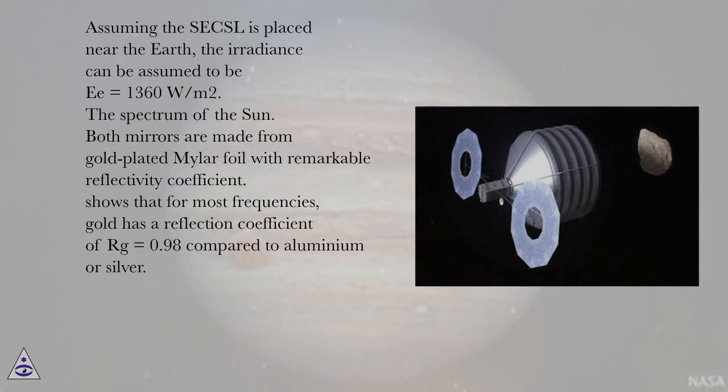Assuming the SECSL is placed near the Earth, the irradiance can be assumed to be E = 1360 W/m². The spectrum of the sun. Both mirrors are made from gold-plated mylar foil with remarkable reflectivity coefficient. Shows that for most frequencies, gold has a reflection coefficient of Rg = 0.98 compared to aluminum or silver.